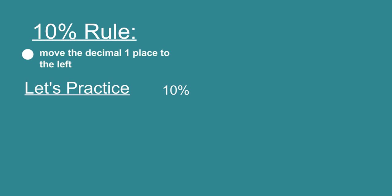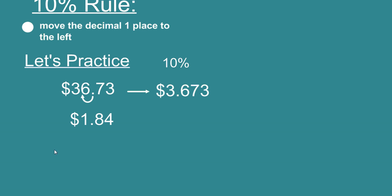Let's practice using this 10% rule. What would be 10% of $36.73? Well that's just like the one that we just did. How about this one? What's 10% of $1.84? That's right and if we round to the nearest cent it would be $0.18.